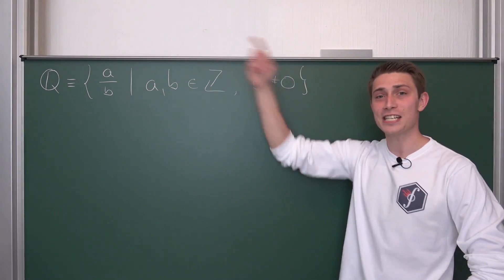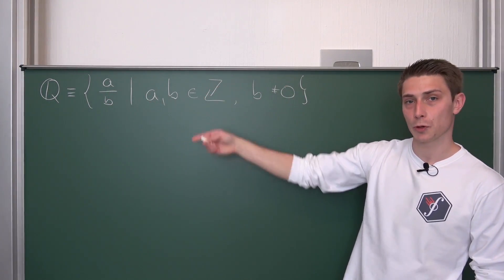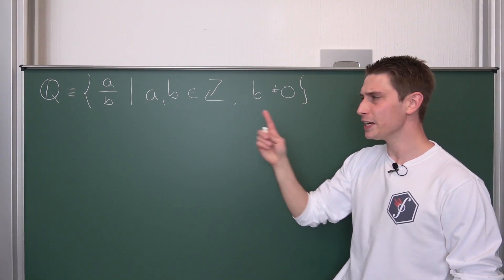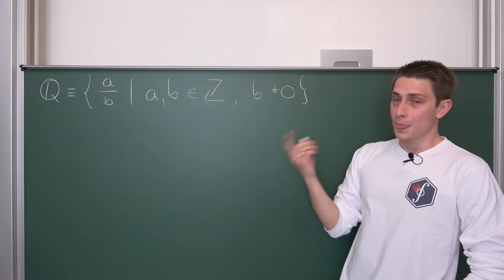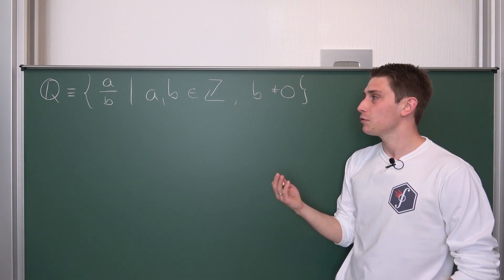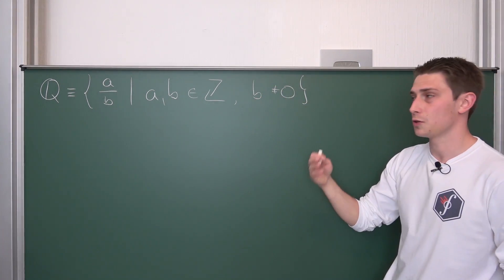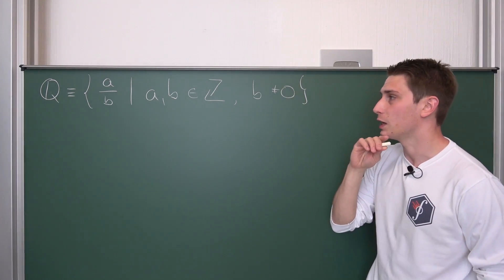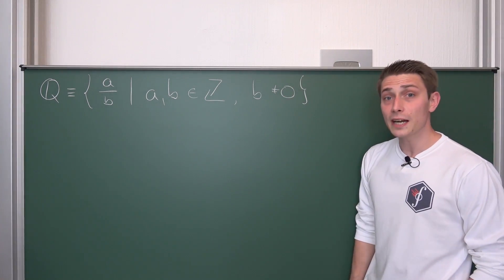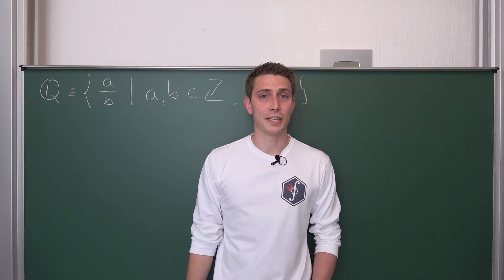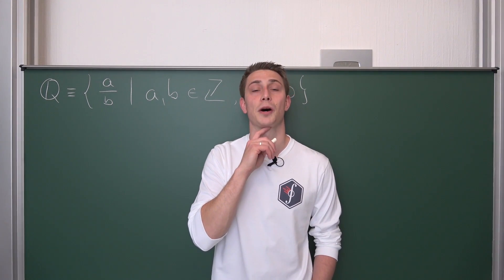We are going to talk about the rationals today. It's the set of things a over b where a and b are out of the positive and negative integers, where b is never, never, ever equal to zero. Division does work in Q — that's spicy.